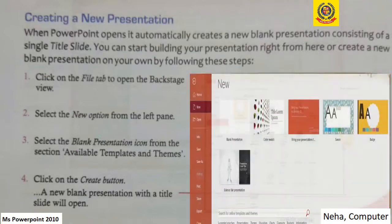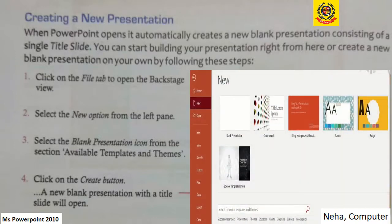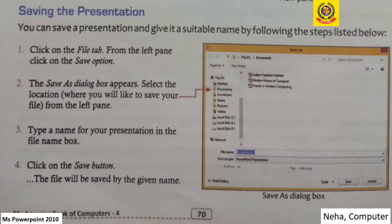After creating a new presentation, we need to save it. For saving, we have to go to the File tab and then click on the Save option. A dialog box will appear where we mention the file name and then click the Save button. In this way our presentation gets saved.